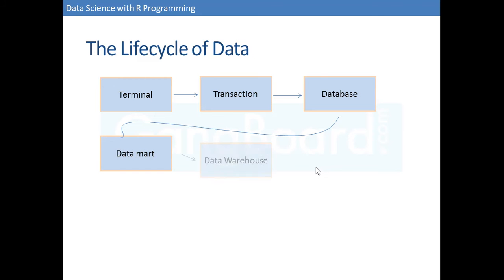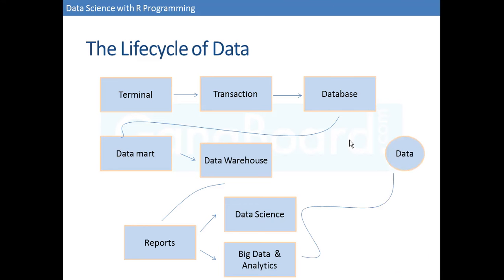A collection of data marts would be a data warehouse, where you are combining similar data marts together into a data warehouse. Then data warehouse gives you reports, the visualization part, and from there you can either take those reports and process them using data science or big data analytics. This typical example is there as it's evolved over the years. This is how a lifecycle of data would have been looking without data science or without the environment that we have seen.